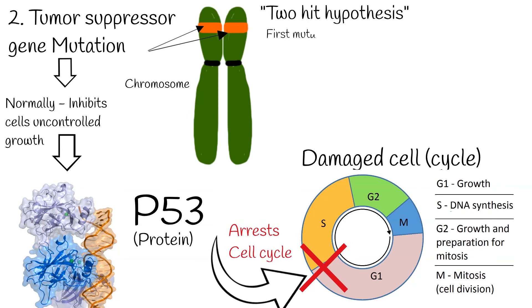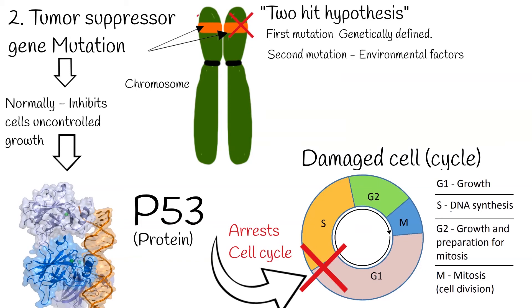According to the two-hit hypothesis, a tumor suppressor on one chromosome can be inactivated congenitally, and the other one can be inactivated by environmental factors, for example, chemicals or radiation.